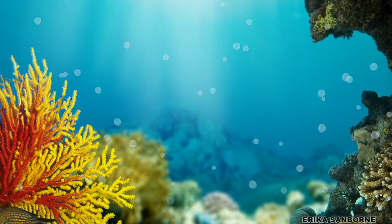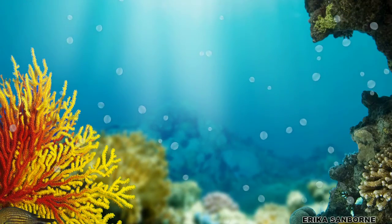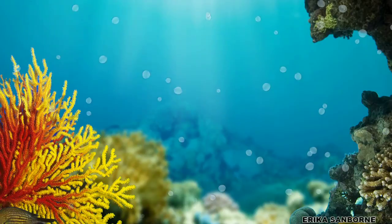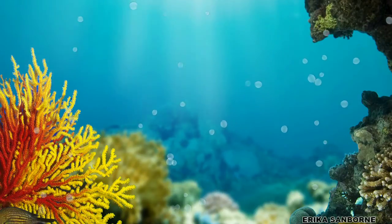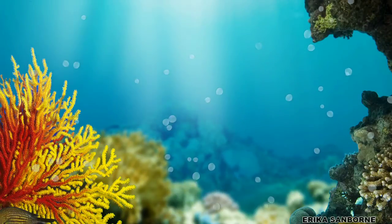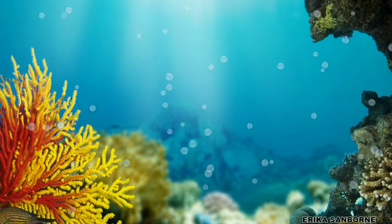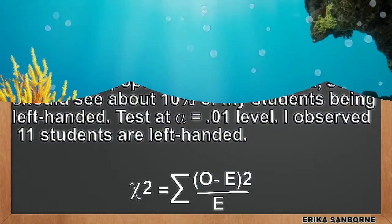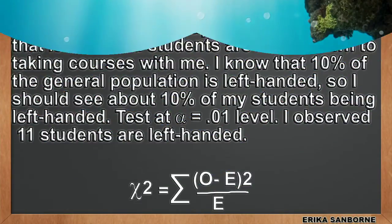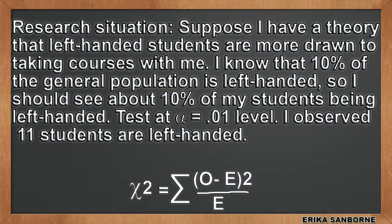Every test we do gives us a statistic — we've got a z-score, t-score, f-ratio, chi-square statistic. The bigger the statistic, the bigger the difference from what we'd expect if there's nothing going on. Let's look at the math on this left-handed situation. Very simple.